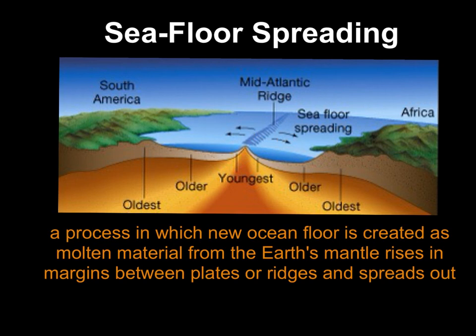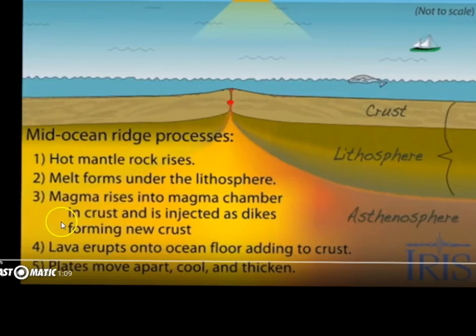On the next slide, you'll see how seafloor spreading actually creates new oceanic floor. Seafloor spreading is the process where new oceanic crust is created. These occur at mid-ocean ridges, where hot mantle rises up. This melting forms under the lithosphere, which is that hard rocky crust that is part of the upper mantle. Magma from the asthenosphere rises into a magma chamber in that crust and is injected as dikes, forming new crust.